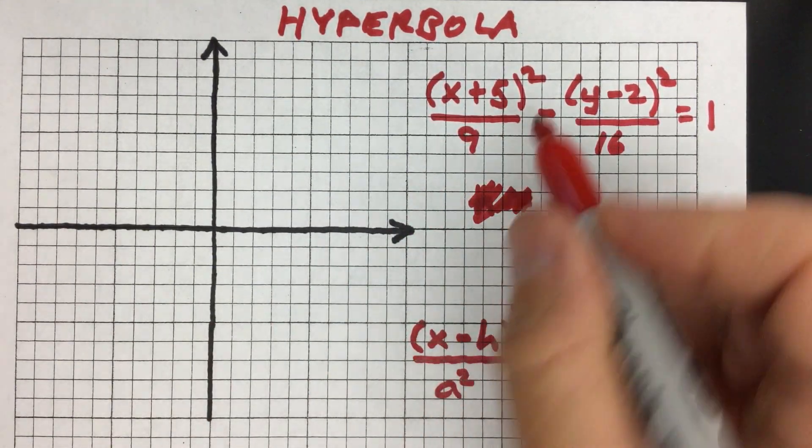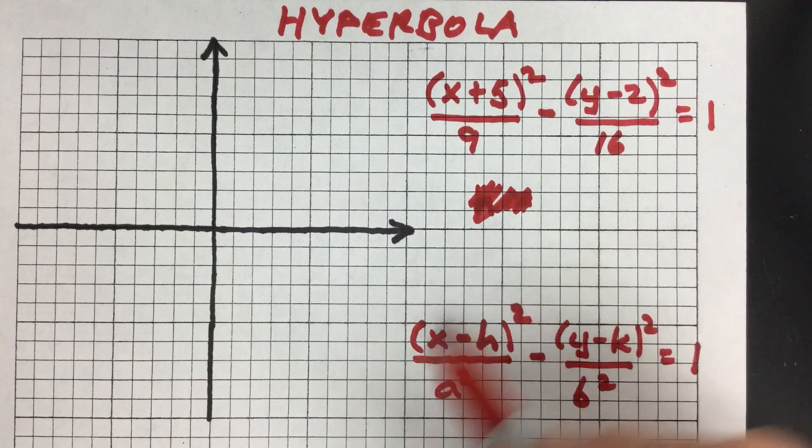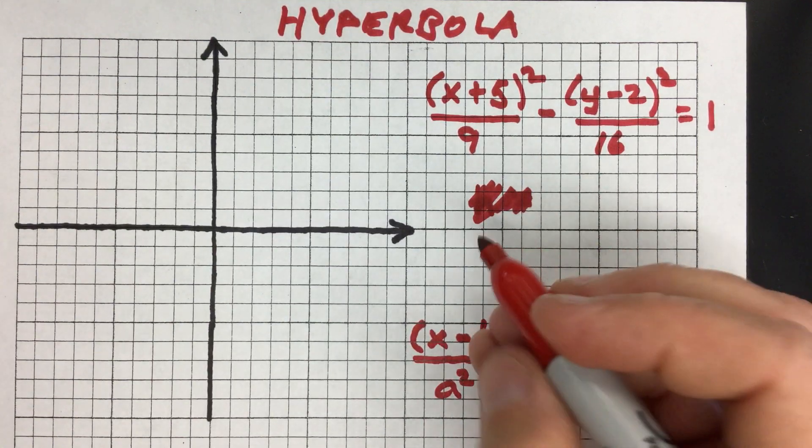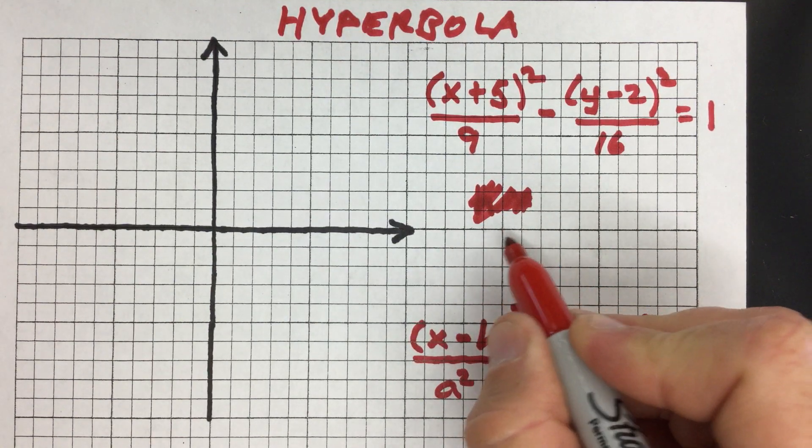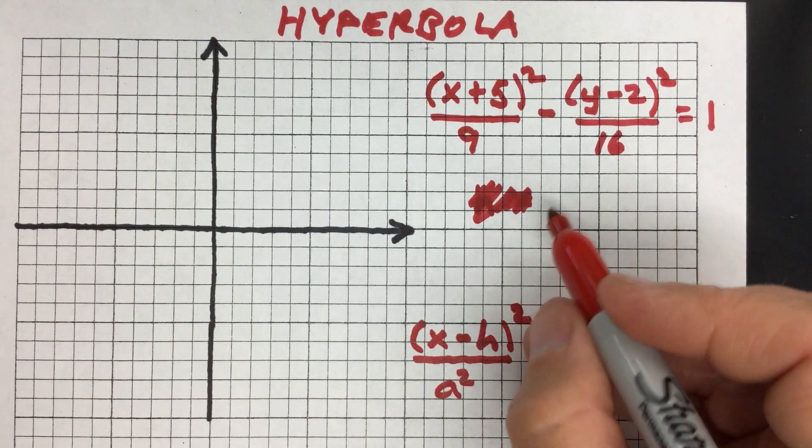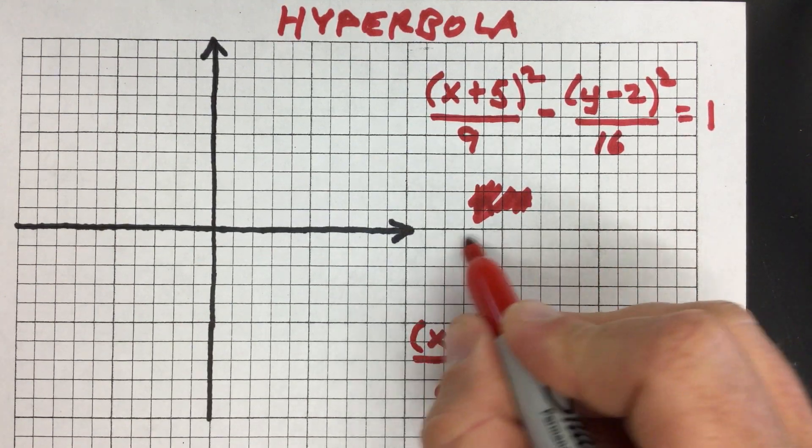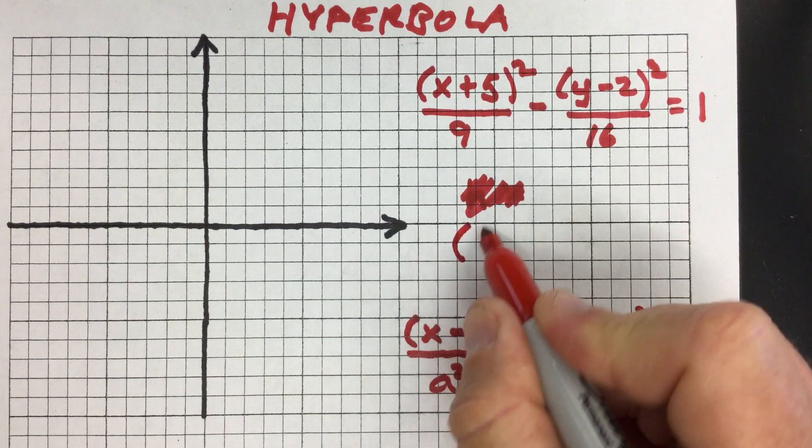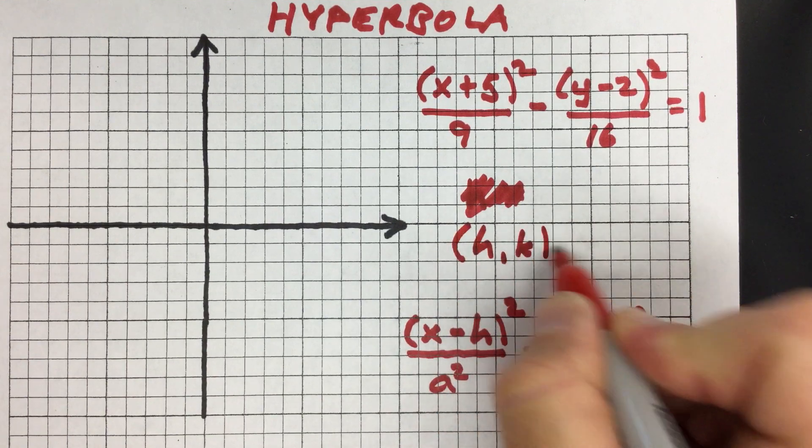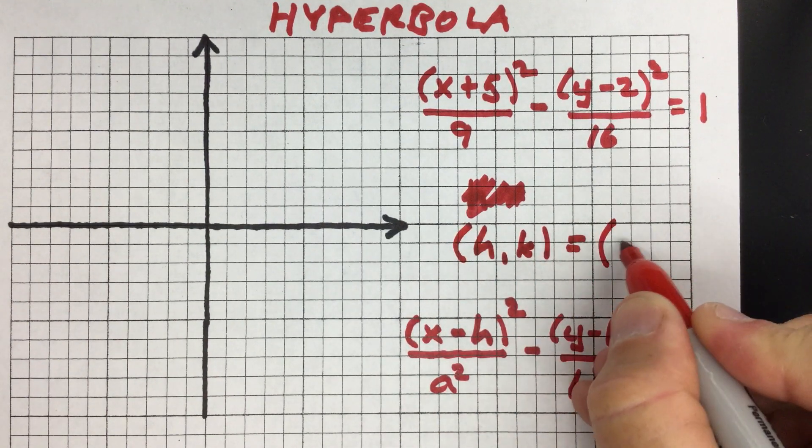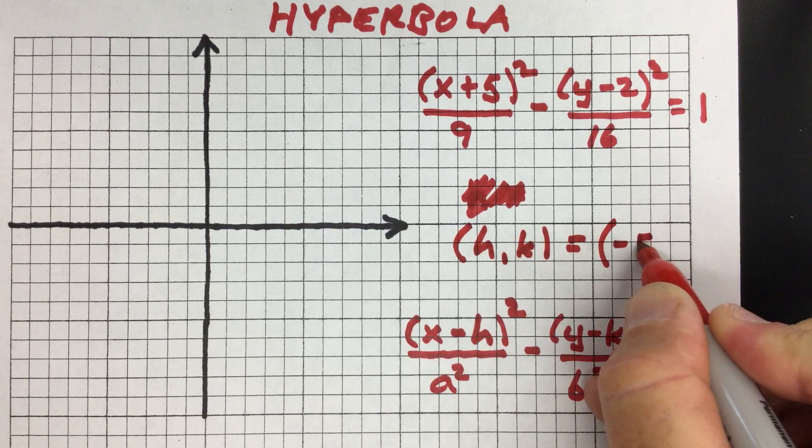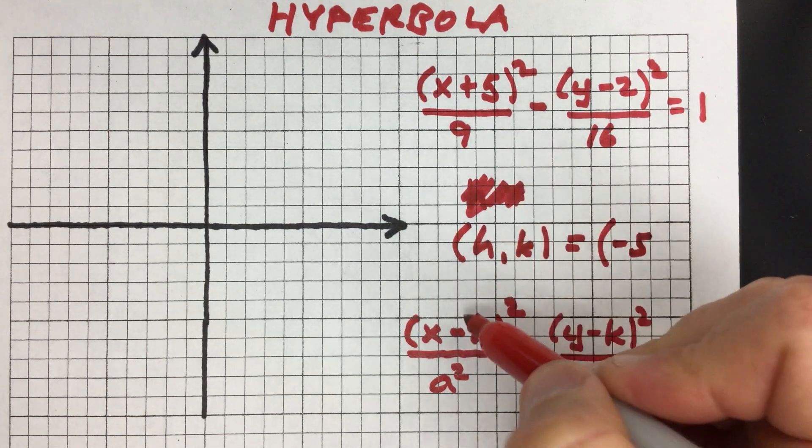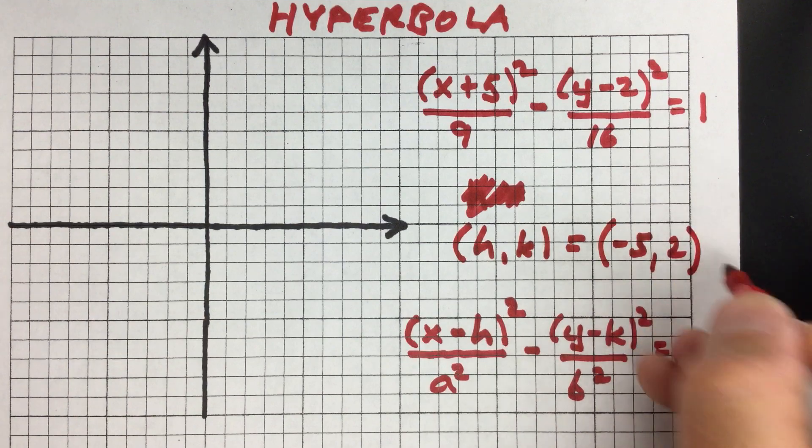If you look at the standard form, you can see that this hyperbola is centered around the coordinates h, k. By comparing these two, h, k is going to be (-5, 2) because this is supposed to be x minus h, and then the y coordinate is 2.